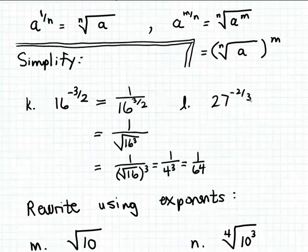For 27 to the minus 2 thirds power, to simplify this power we're going to handle it in a very similar way. First we're going to deal with that negative sign on the exponent. I can make that negative sign positive by taking the reciprocal of the base. So 27 to the minus 2 thirds power is the same as 1 over 27 to the 2 thirds power.